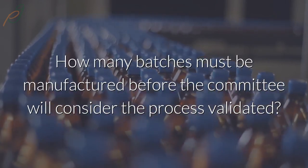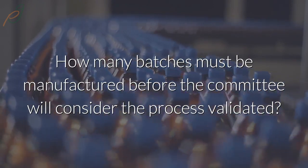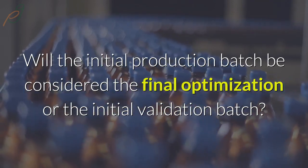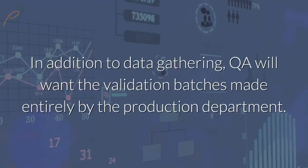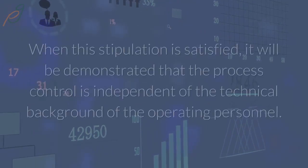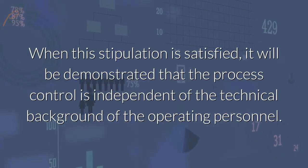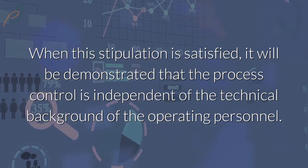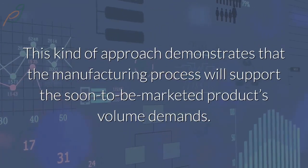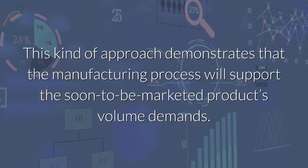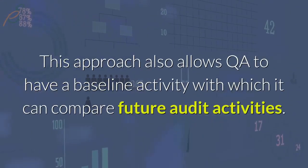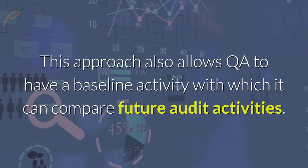How many batches must be manufactured before the committee will consider the process validated? Will the initial production batch be considered the final optimization or the initial validation batch? In addition to data gathering, QA will want the validation batches made entirely by the production department. When this stipulation is satisfied, it will be demonstrated that the process control is independent of the technical background of the operating personnel. This kind of approach demonstrates that the manufacturing process will support the soon-to-be-marketed product's volume demands, and also allows QA to have a baseline activity with which it can compare future audit activities.